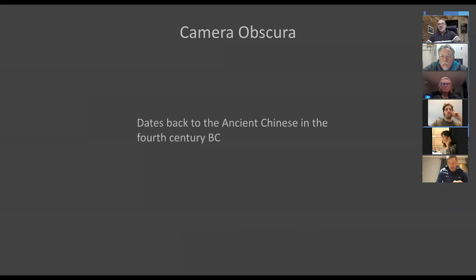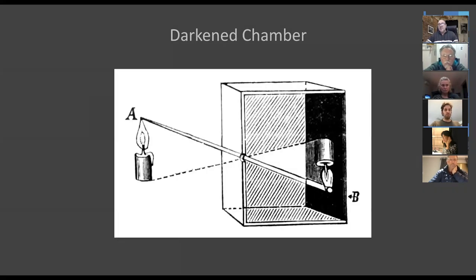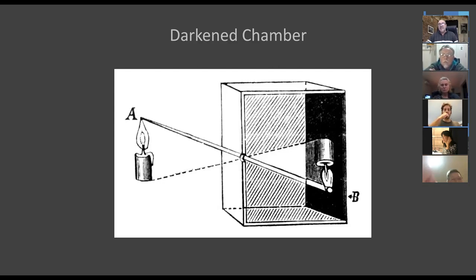The camera obscura dates back to the ancient Chinese, right back in the fourth century before Christ. One would almost not believe that photography could be this old, but it is. The word 'obscura' essentially means darkened room, and a camera obscura is a darkened chamber where light enters through a tiny little hole — that is the essence and basis of photography.